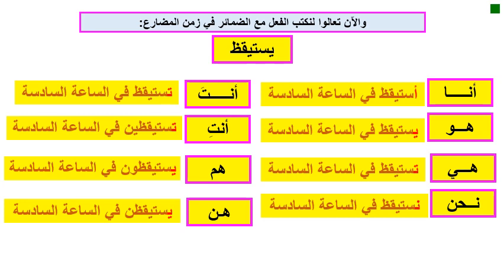نحن (we): we don't have to use نحن all the time — we can use 'نا'. We say: نستيقظ في الساعة السادسة. أنت (you, masculine): تستيقظ في الساعة السادسة — You wake up at six o'clock, when referring to boys.